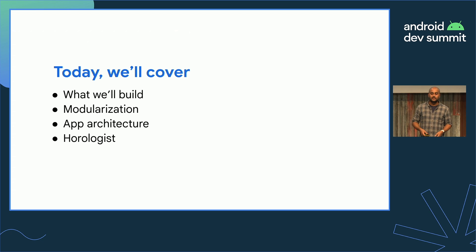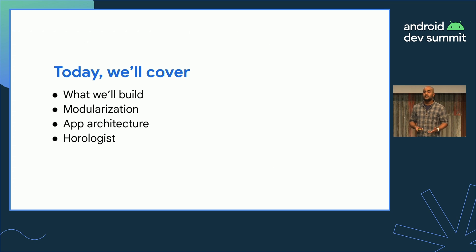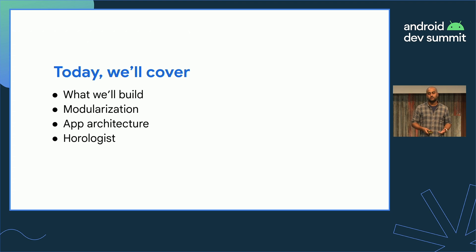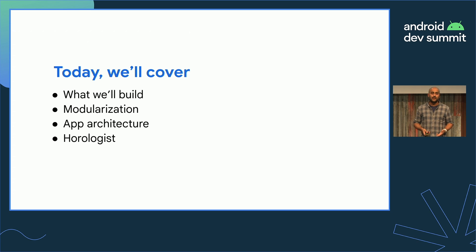Over the next 20 minutes, we'll show you what we're trying to build — our end goal. We'll demonstrate how a well-modularized project can get us halfway there and demonstrate how we plan to structure our code. Finally, we'll share some features from the Horologist library, which can help us build the app quickly.